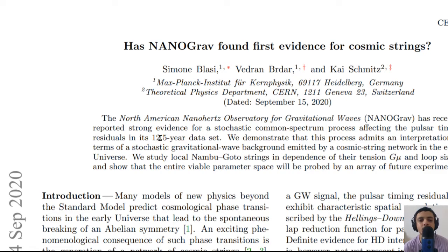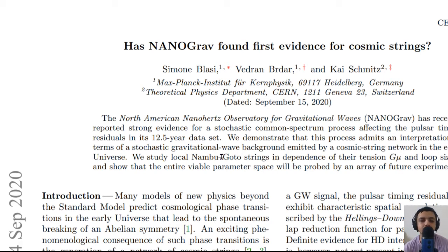The North American Nanohertz Observatory for Gravitational Waves, NANOGrav, reported strong evidence for a stochastic common spectrum process that affected pulsar timing residuals, based on a 12.5-year-old data set.